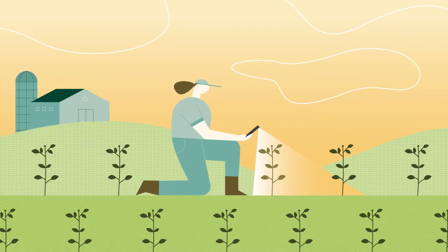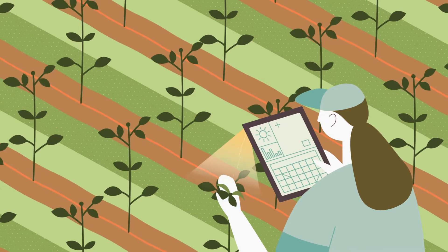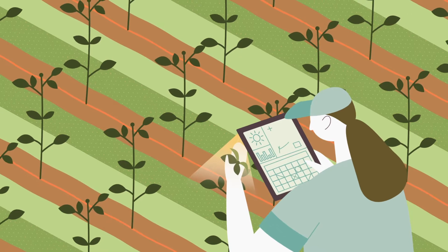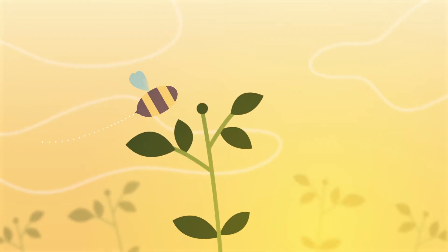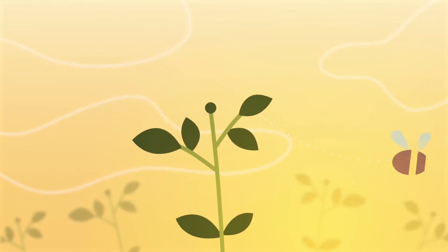A soybean farmer is not only focused on the health of their crop but the health of the land it's grown on. Sustainable farming is more than just a conscientious practice. It's a way of life for a soybean farmer and has been for a very long time.